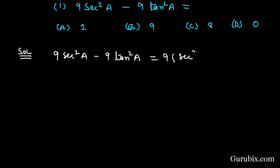And here we have identity that is sec square theta equals to 1 plus tan square theta. So sec square theta minus tan square theta will be equals to 1.